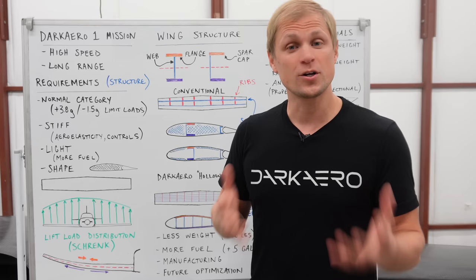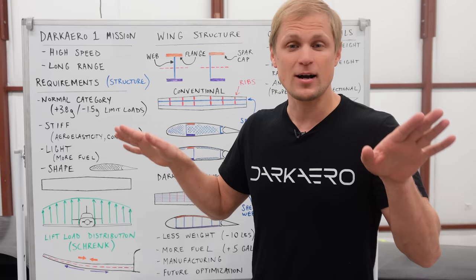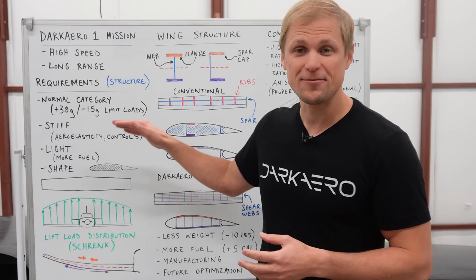The other issue with the controls and wing stiffness is that if our wing was too flexible it could bend up under a high g-load maneuver and actually jam the controls. So we want the wing to be stiff to keep the controls safe. We also want the wing to be light.